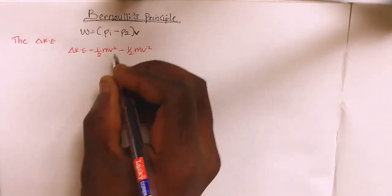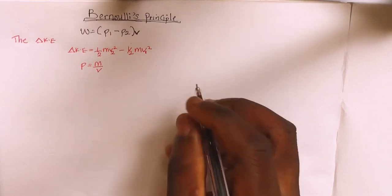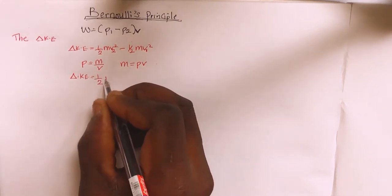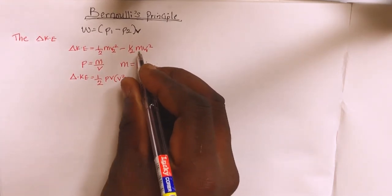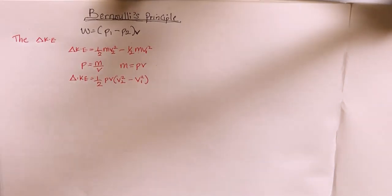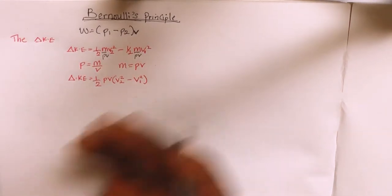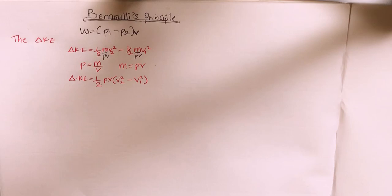We can recall that mass equals density times volume, so m equals ρV. Substituting back, the change in kinetic energy equals one-half ρV times (v2 squared minus v1 squared). Substituting ρV and factorizing, we get the change in kinetic energy equals one-half ρV into bracket (v2 squared minus v1 squared). Let's call this equation one.